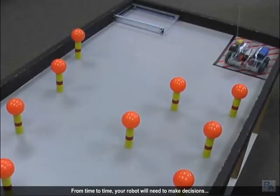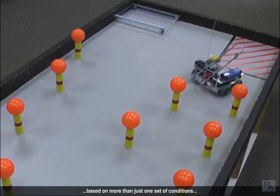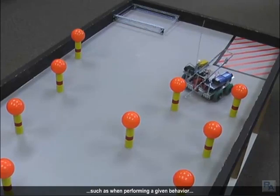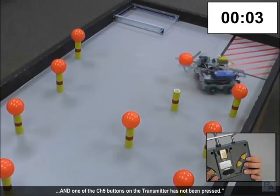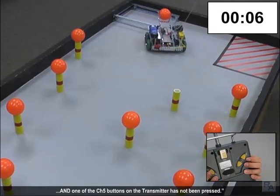From time to time, your robot will need to make decisions based on more than just one set of conditions, such as when performing a given behavior while the value in timer T1 is less than 2 minutes, and one of the channel 5 buttons on the transmitter has not been pressed.